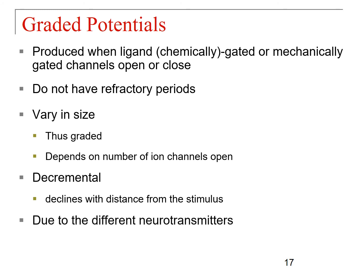Graded potentials can vary due to different neurotransmitters. Some neurotransmitters bind to channels that let sodium in — these are stimulatory. Some neurotransmitters bind to a receptor and actually let potassium out — these are inhibitory neurotransmitters. So some graded potentials are excitatory and some are inhibitory.